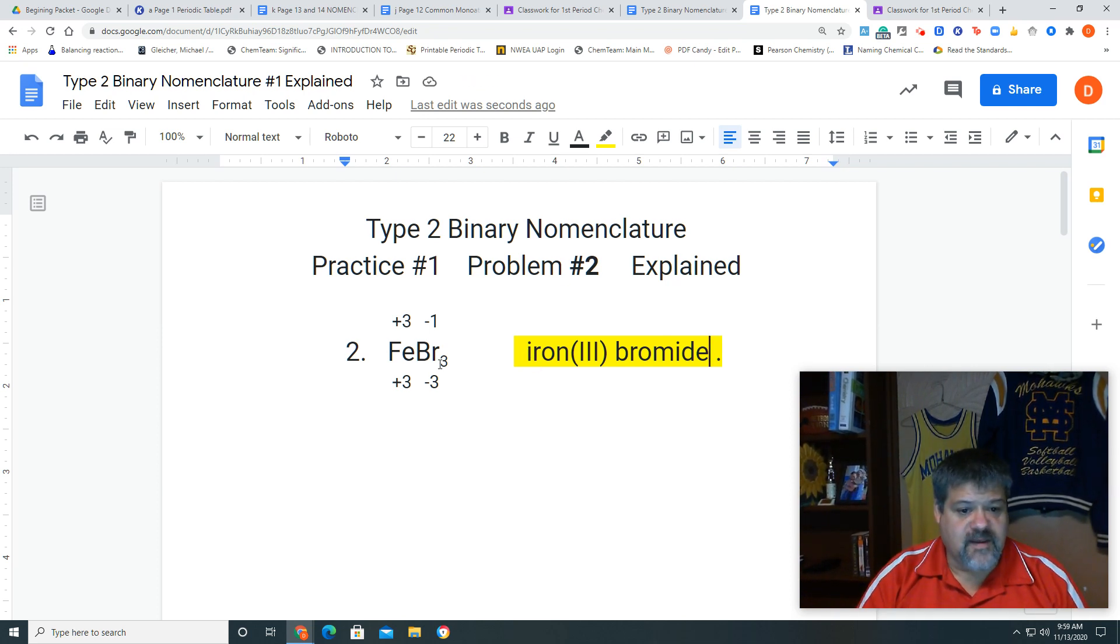Remember the shortcut was this. If this subscript right here, which is one, equals the charge of the non-metal, then whatever the subscript of the non-metal is becomes the charge of the metal. And metal is always plus, and non-metal is always negative. So that's our shortcut, that reverse crisscross.